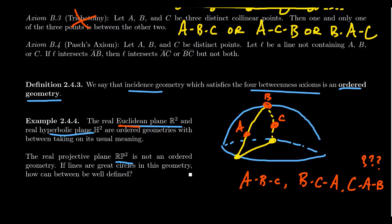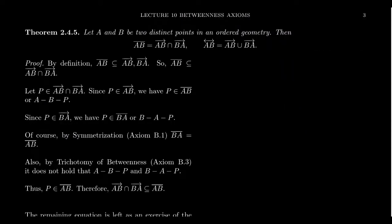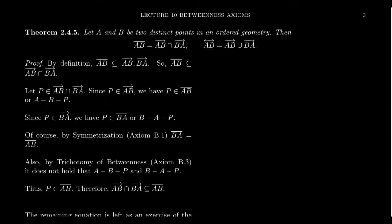Interestingly, both Euclidean and hyperbolic geometry have betweenness. As we end this video, I want to prove one theorem about ordered geometry. If A and B are two distinct points in ordered geometry, then the segment AB equals the intersection of rays AB and BA. Additionally, the line determined by A and B equals the union of rays AB and BA. We'll prove the first statement together, and I'll leave the second as an exercise. Intuition suggests this is true, but intuition alone is not a proof — we must justify it with the axioms.